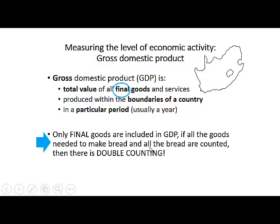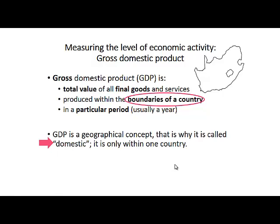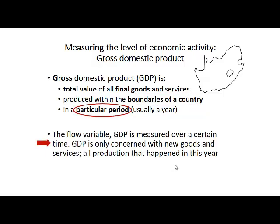So we only take into account final goods and services — for example, only the final bread that is produced. We look at production within a particular country, so GDP is a geographical concept, which is why we call it 'domestic.' It's only about what was produced within one country, and it refers to a particular period. It's a flow variable measured over a certain time, concerned only with new goods and services produced during that period.